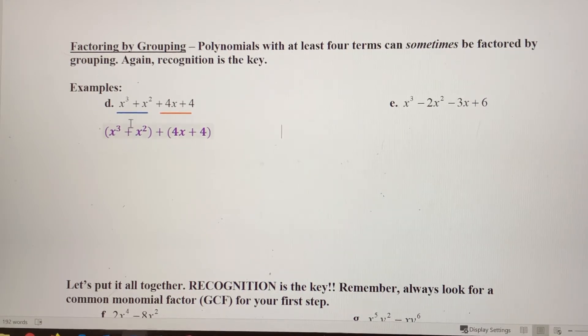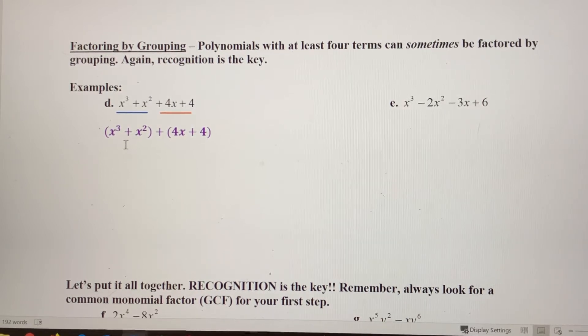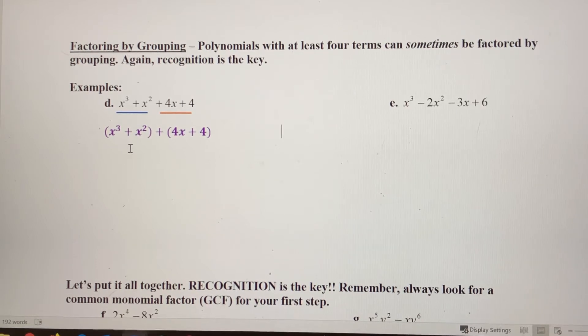All I've done is add parentheses here to group these two terms together and these two terms together. Now I want to use factoring, GCF, or basically think of it as undoing the distributive property for each of these.